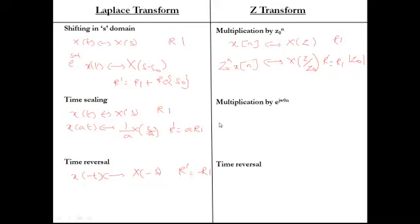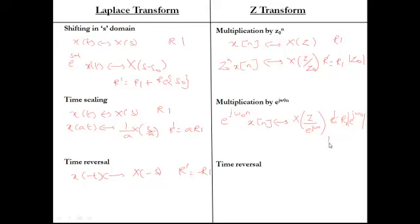For Z-transform time reversal: X(−n) gives X(1/z) with ROC R' = 1/R1. Multiplication by e^(jω₀n): X(n)·e^(jω₀n) gives X(z·e^(−jω₀)), and the ROC remains R1 since |e^(jω₀)| = 1.